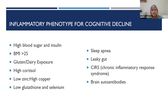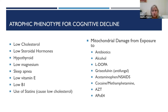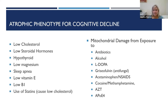These are all components of that inflammatory phenotype that have to be teased out to find out which, if any, are relevant for you, and then addressing them. The atrophic phenotype is the one where you don't have the nourishment it takes to make proper brain cells and have proper communication. This can be because you're not getting enough cholesterol, either because you're not making it or because you're taking a statin to bring it down low. It could be because your steroidal hormones are low because you're in menopause or andropause.